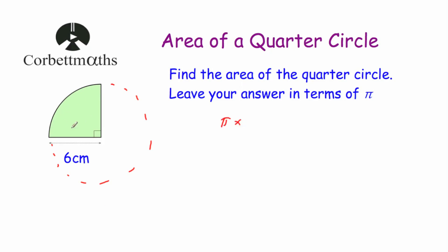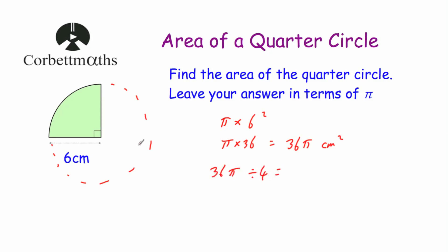The area of the whole circle is pi times the radius six squared — pi times six squared. Six squared is 36, so that's pi times 36, which equals 36 pi centimetres squared. That's the area of the whole circle. Now we want the area of the quarter circle, so we divide by four: 36 pi divided by four. Since 36 divided by four is nine, that gives us 9 pi centimetres squared.